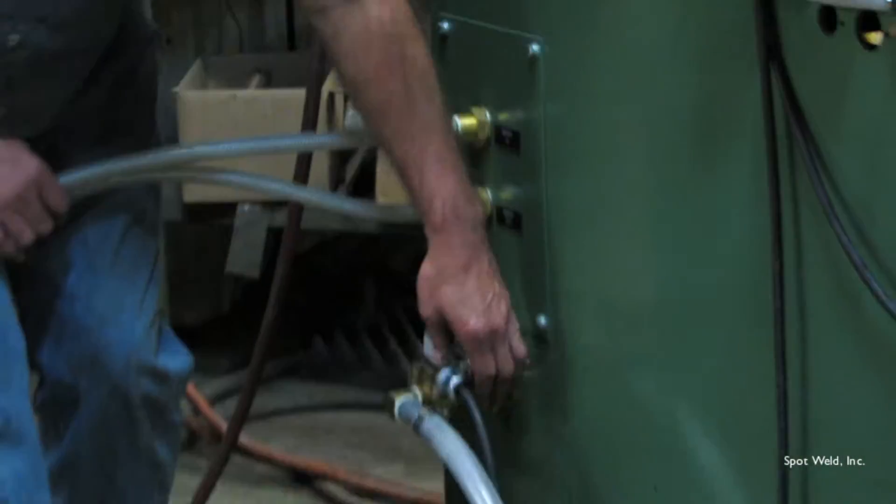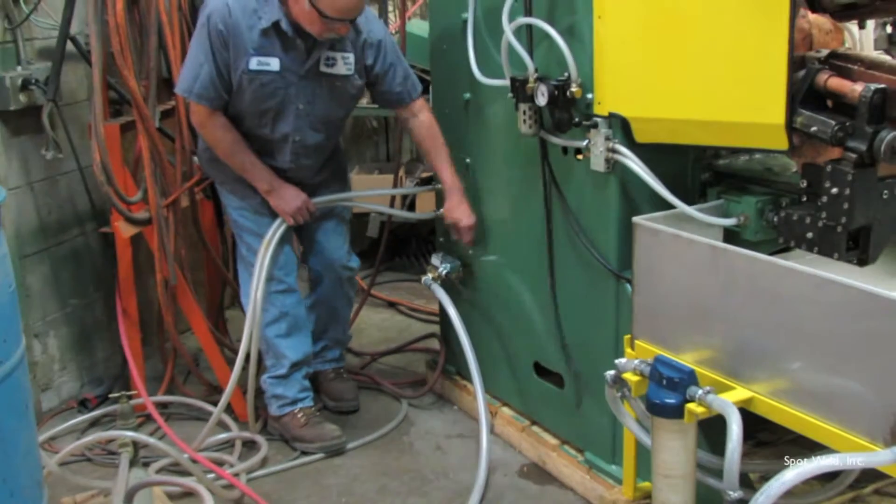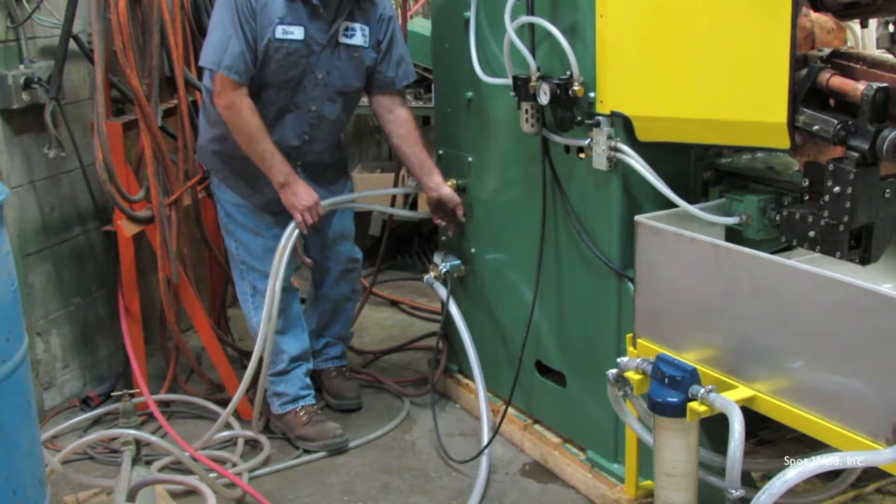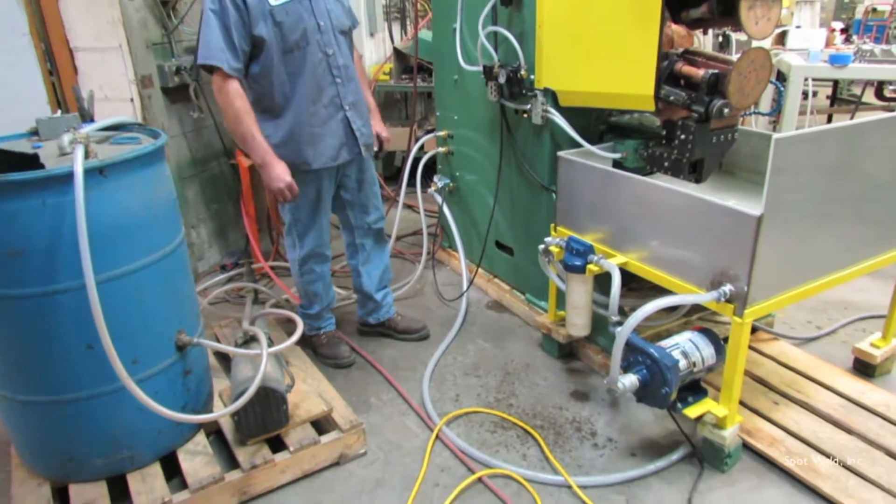This one here, we have a solenoid valve on. When the foot switch is activated, this opens up allowing the water to spray on the wheels. So that's the external water circuit.